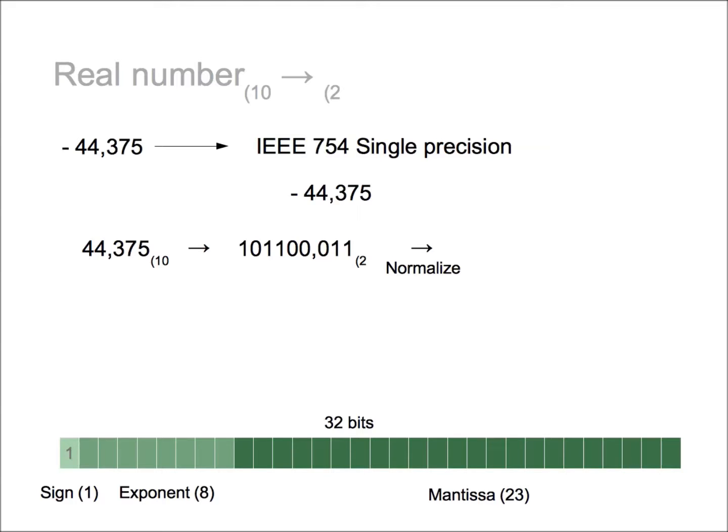So we need to multiply by 2 raised to 1, 2, 3, 4, 5, and 6. That is the normalized number.